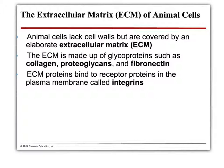It's a bunch of proteins and polysaccharides configured in such a way that allows communication between and within cells. It's made up of glycoproteins called collagen — collagen is a protein. Proteoglycans — 'proteo' refers to protein, and 'glyc' refers to sugar, so it's a protein-sugar complex. Glycoproteins are a sugar-protein complex. Fibronectin is another protein. All of these are components of the extracellular matrix, and depending upon the cell type, the extracellular matrix can change.